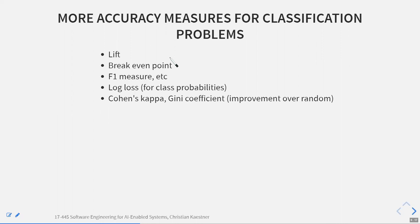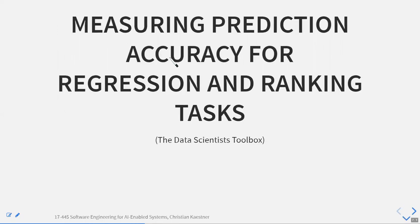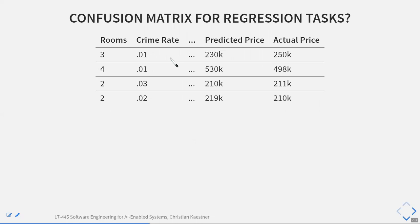Accuracy is the most general but the most blind — it works for multi-class problems. Recall and precision give you more insight into false positives versus false negatives. Area under the curve is useful when you have a threshold. For regression tasks, a confusion matrix doesn't really make sense unless you put values into buckets and treat it as classification, but that's usually not what you want. You typically want to ask: how close are the outputs to the actual values?